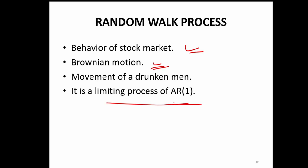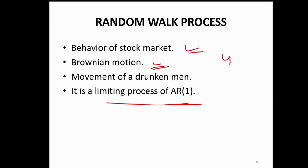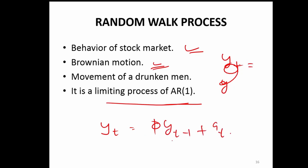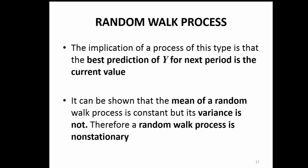It is also a limiting process of an AR(1) process. The AR(1) process is just yt equal to phi times yt-1 plus at. When phi equals 1, you get the random walk process. If phi is less than 1, you have the AR(1). So, random walk is basically the special case of AR(1) where you cannot go ahead in building a forecasting model.